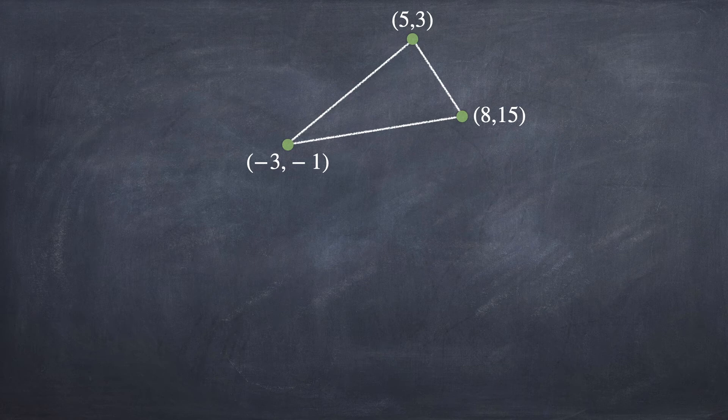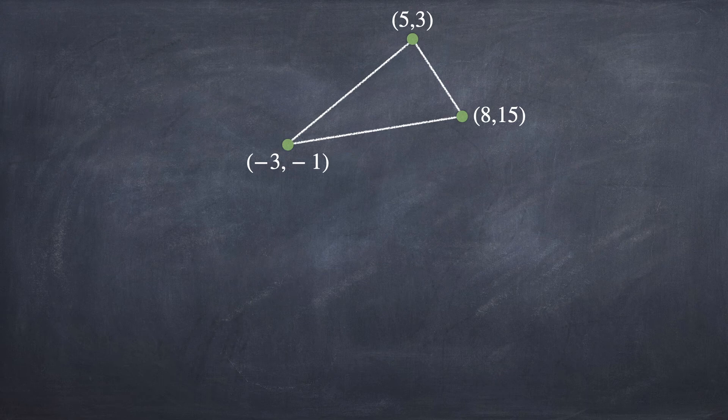Suppose we have a triangle with three points: (-3, -1), (5, 3), and (8, 15).